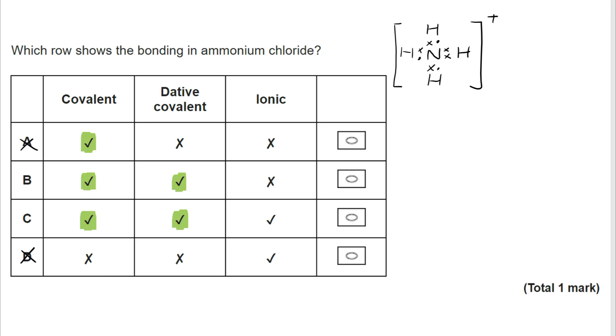Now ammonium chloride, there's already a big giveaway here that the NH4 is plus one, so the chloride is minus one. For that reason within ammonium chloride we are seeing evidence of covalent, dative covalent and ionic bonding.